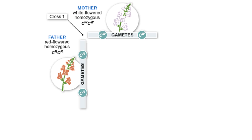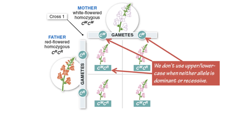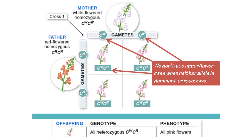We can plot this out on a Punnett square. We put the female's gametes up top — in this case we call them C for color, with a W superscript meaning she produces white flowers, and an R superscript for the father who produces red flowers — and we see that all the offspring are pink. Note that we don't use uppercase or lowercase letters to denote an allele if we don't have complete dominance. Instead, we use a big letter for the gene and then a superscript for the version. All of the genotypes from this cross are heterozygous, and all the phenotypes are pink flowers.